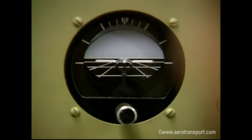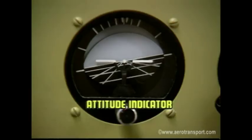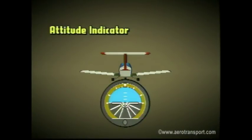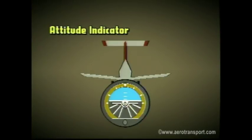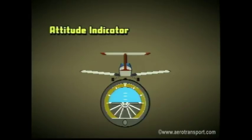The next instrument is the attitude indicator, also known as the artificial horizon. This instrument gives the pilot a horizon of reference when the natural horizon is not visible. It will show you the relationship of the nose and wings to the Earth. The face of the instrument has a horizon bar and a split bar, or a miniature aircraft, to represent the attitude of the aircraft. The degree of bank is indicated by a scale at the top of the instrument. When a plane is in a nose-down attitude, the miniature plane drops below the horizon bar. In a nose-up attitude, the plane rises above the artificial horizon. In level flight, it is lined up with the horizon.